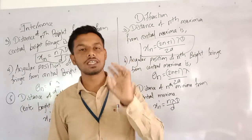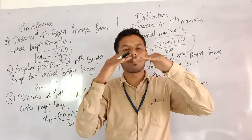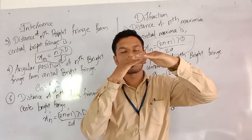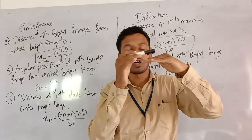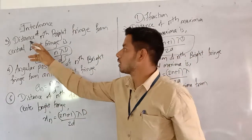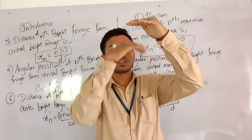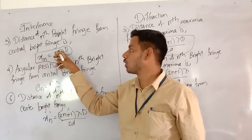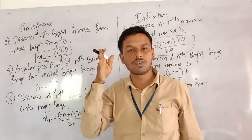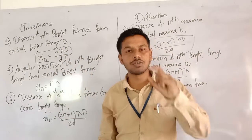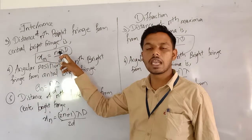The third point is the distance of the nth bright fringe. In interference, the distance of the nth bright fringe from the center is given by xn = nλD/d, where n is the fringe number, λ is the wavelength of light, D is the distance between the slit and screen, and d is the distance between the two sources.